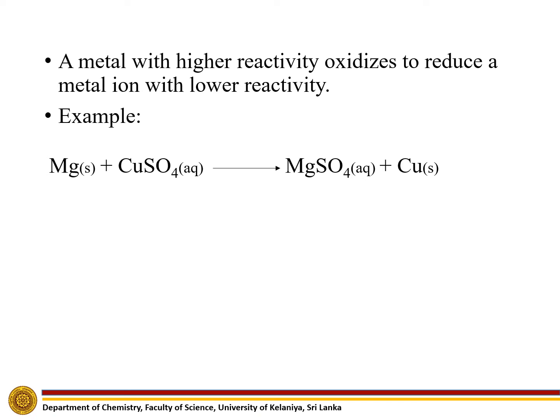For example, let us consider the reaction between magnesium and copper sulphate. Here, the magnesium at the top of the activity series oxidizes to magnesium 2+ and copper 2+ at the bottom of the activity series reduces to copper metal.